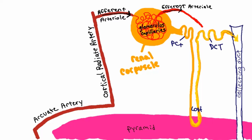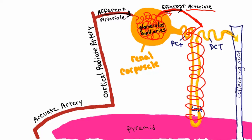The efferent arteriole exits the renal corpuscle, comes down, and wraps around the proximal convoluted tubule, then goes down and wraps around the loop of Henley, and continues wrapping around those tubules. As it wraps around, the efferent arterioles have gotten even smaller, becoming capillaries. So these are all capillaries wrapping around the tubules, and they come back around and wrap around the distal convoluted tubule as well.